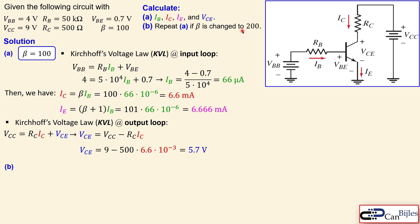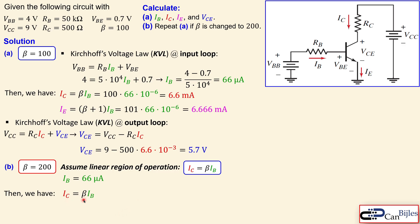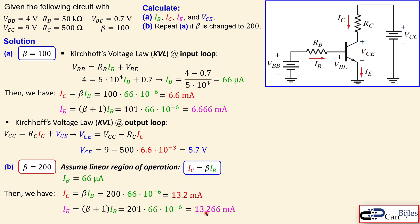Now for question B, we repeat the process with beta changed from 100 to 200. Assuming linear region operation, IC equals beta times IB. The base current IB does not change because the input loop expression is not dependent on beta, so IB remains 66 microamps. The new IC is 200 times 66 microamps, giving 13.2 milliamps. IE becomes 201 times 66 microamps, which is 13.266 milliamps.